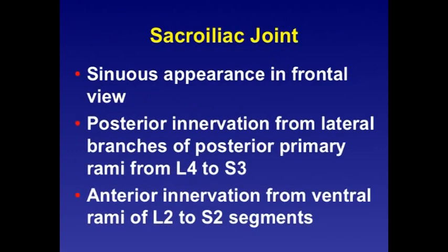Sacroiliac joint injections: there are two innervations — the posterior part and the anterior part. The posterior part is innervated from L3 down to S3, with L5, S1, and S2 branches innervating 90% of the posterior part. The anterior innervation is from L2 to S2 segments, with L3 down to L5 innervating 90% of the anterior portion. Either the superior or inferior part of the sacroiliac joint may be involved in generating pain. We will selectively block the nerve branches supplying the sacroiliac joint, and these techniques are used prior to radiofrequency of the sacroiliac joints or the branches supplying the joint.